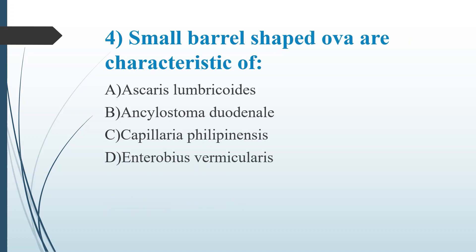Fourth question: Small barrel-shaped ova are characteristic of — Option A: Ascaris lumbricoides. Option B: Ancylostoma duodenale. Option C: Capillaria philippinensis. Option D: Enterobius vermicularis. The answer is Option C, Capillaria philippinensis. Note: barrel-shaped eggs are a characteristic feature of Trichuris trichiura, but since it is not in the options, the answer is Capillaria philippinensis.